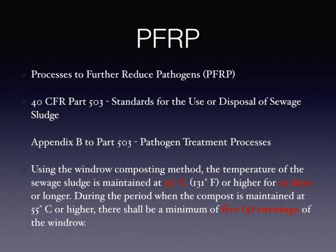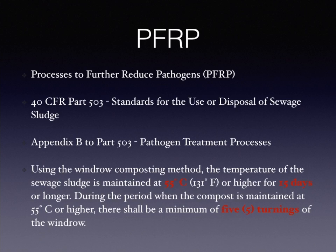PFRP means Processes to Further Reduce Pathogens, taken from Title 40, Code of Federal Regulations, Part 503, Standards for the Use or Disposal of Sewage Sludge. The components of composting may contain pathogens that must be neutralized to be considered safe. Specifically, Appendix B to Part 503 reads — notice the trio of fives: using the windrow composting method, the temperature of the sewage sludge is maintained at 55°C or higher for 15 days or longer. During that period, there shall be a minimum of 5 turnings of the windrow.